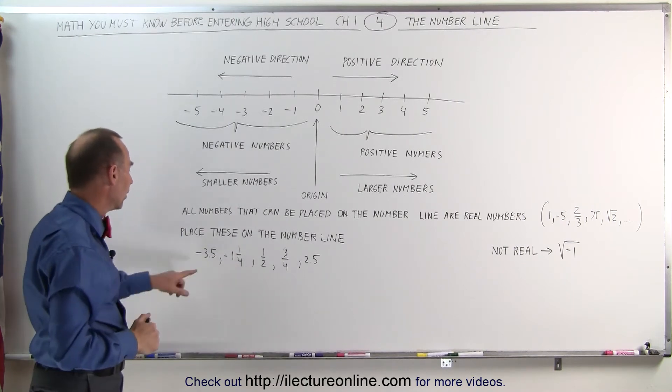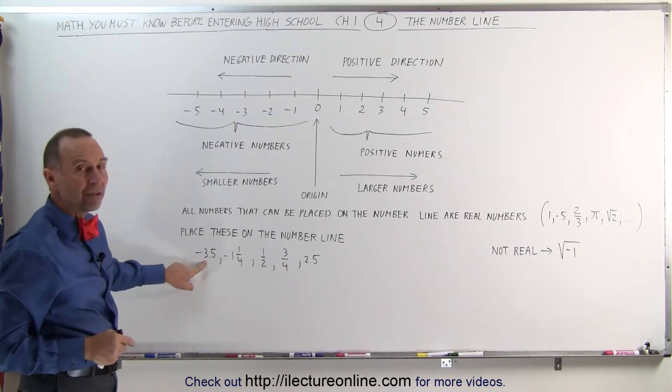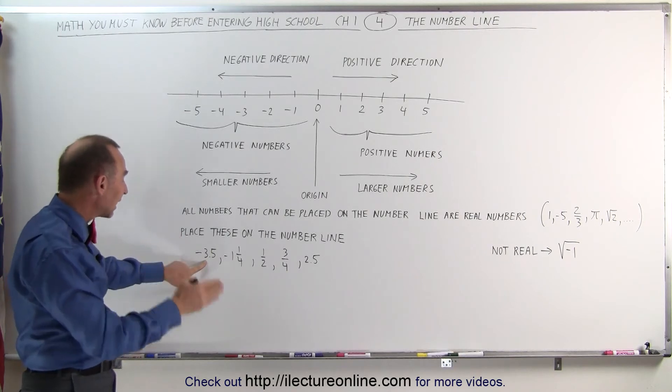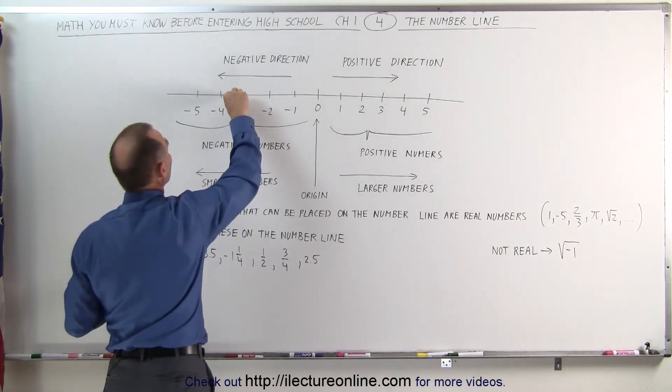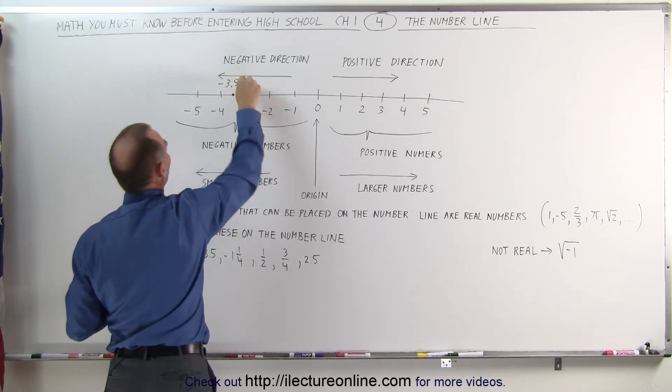But let's go to these numbers right here. The number negative 3.5, that means it's halfway between negative 3 and negative 4, that means it must be right here. This is the number minus 3.5.